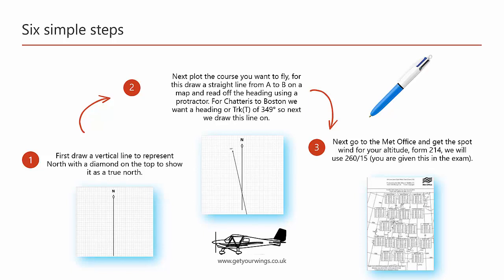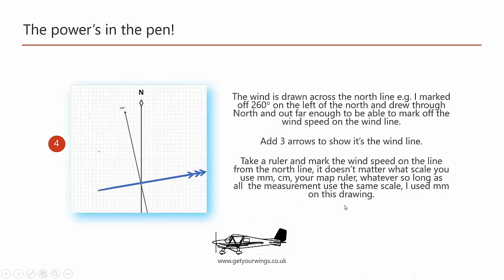Next go to the Met Office and look up the wind speed and direction from Form 214. Draw that on a piece of paper as we have here marking it with three arrows to show that it's the wind speed.